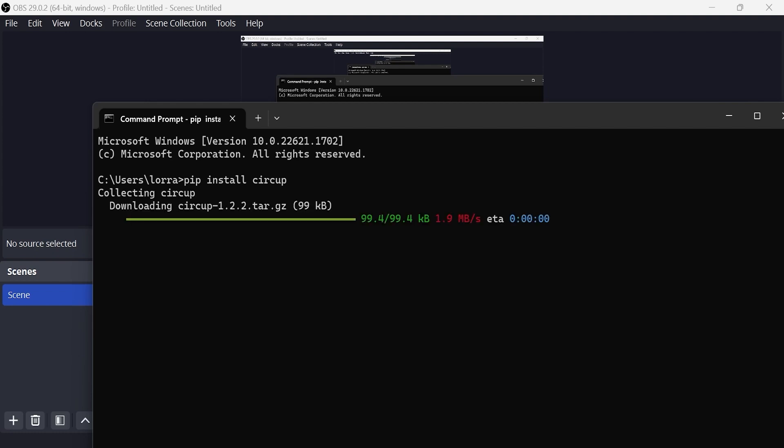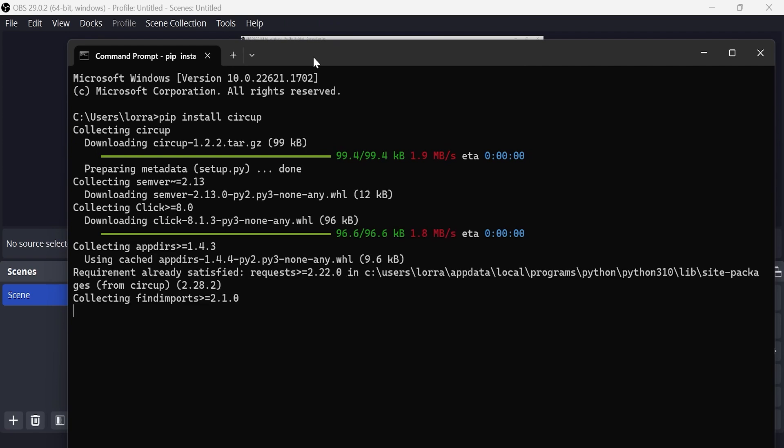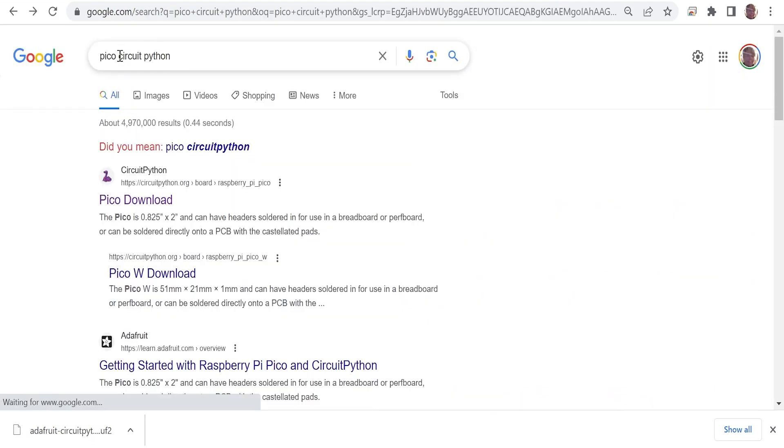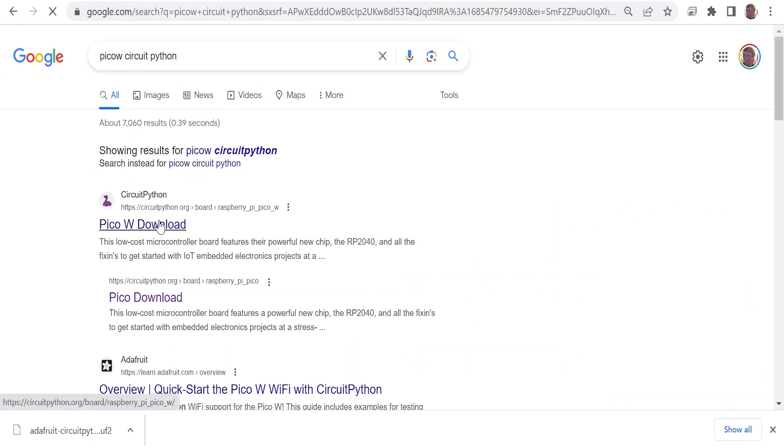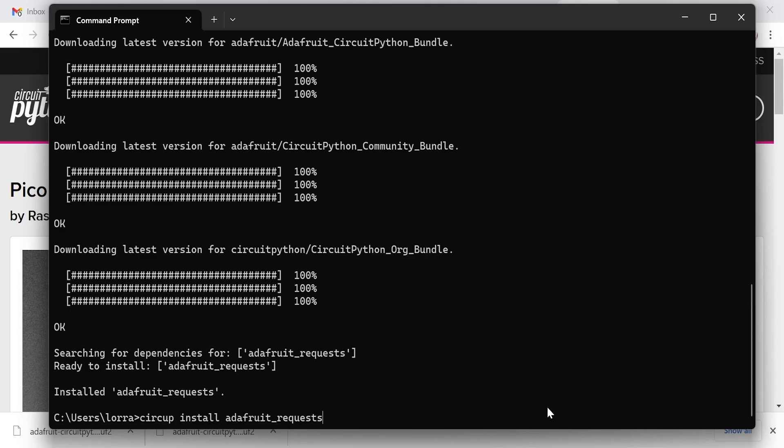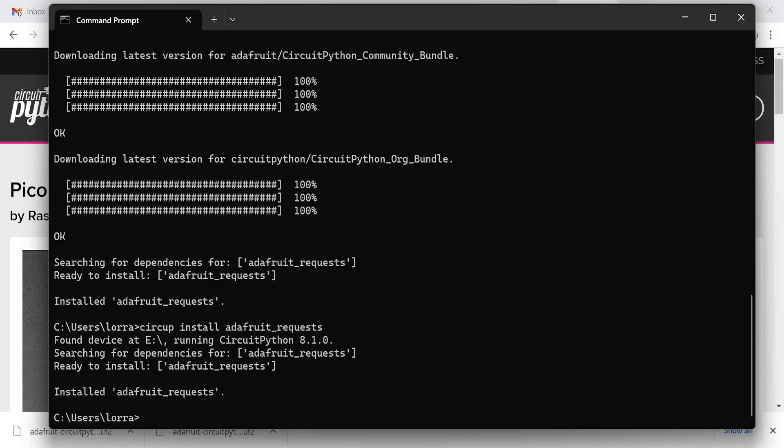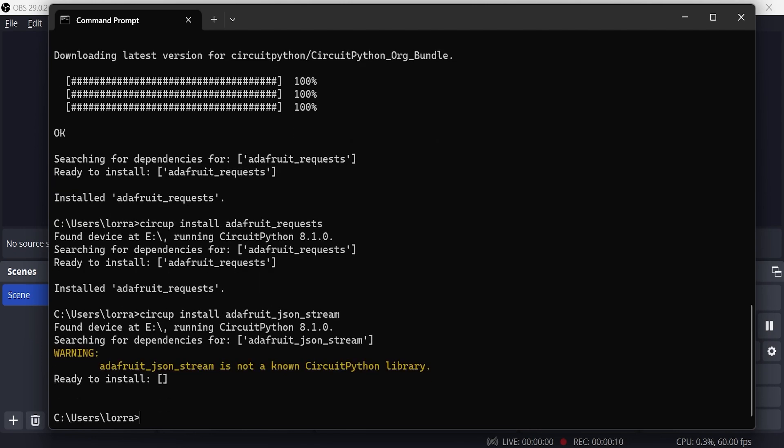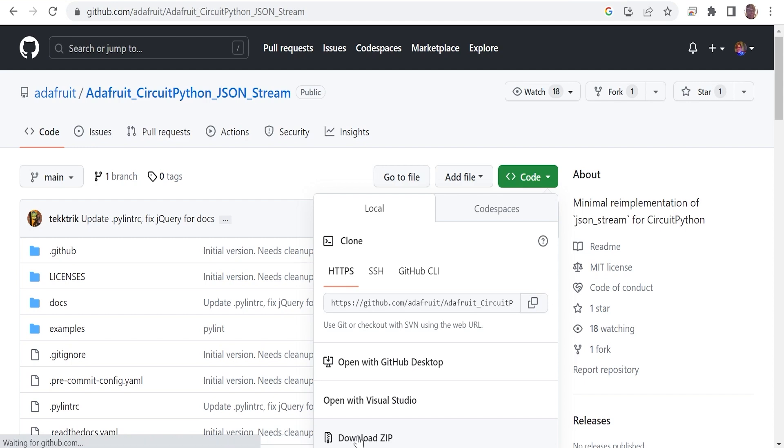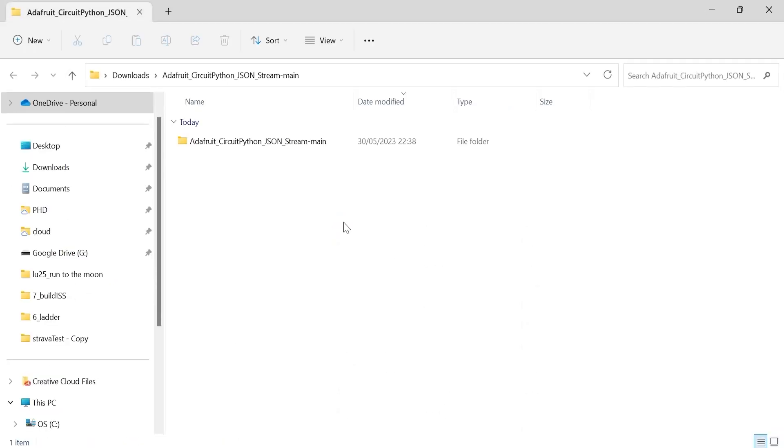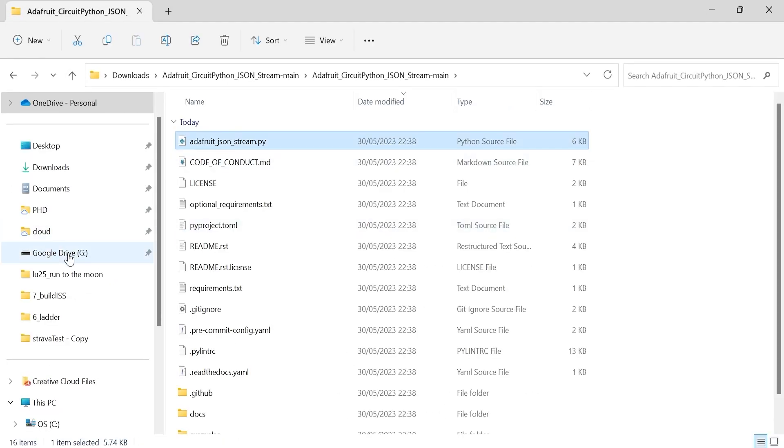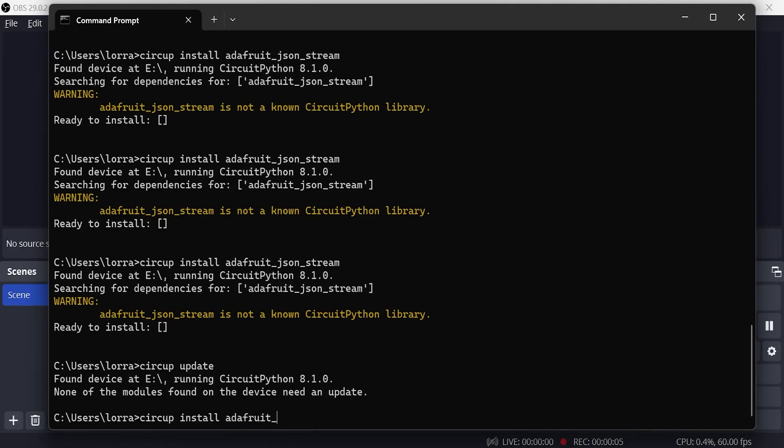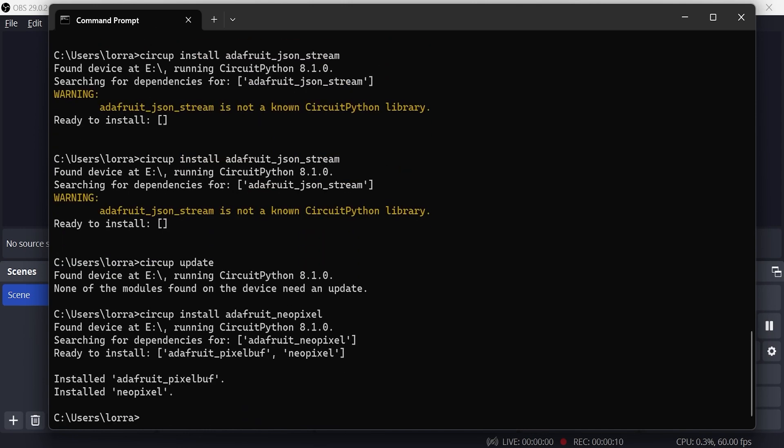For the PicoW, then, we need this Circup library, just to help us install some CircuitPython libraries onto the PicoW. You need the PicoW code, not the Pico code, which is what I downloaded initially. If you search that on Google, it brings you to the CircuitPython website, so you hold down the reset button as you plug in the USB cable, and that lets you download this code on there. The actual libraries we need are the Adafruit requests library. We also need this JSON stream library, because of the problems with memory.